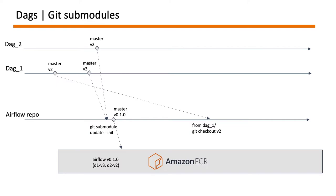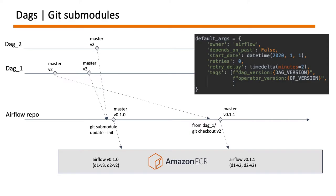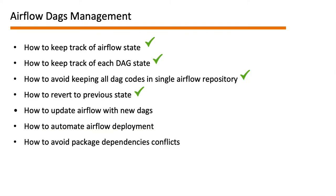By the way, I'll be starting a series on introduction to git and specifically how to use git submodules very soon. Once the developer updates the state of the DAG 1 submodule, they generate a new Airflow repository version 0.1.1, which gets deployed to ECR containing DAG 1 version 2 and DAG 2 version 2. As a good practice, we also mention the current DAG and operator versions in the DAG code within the default args, so you can easily view the current version from the Airflow web server UI.